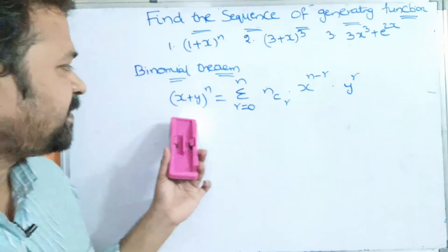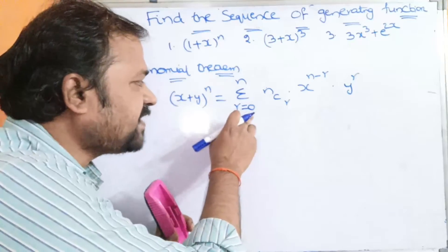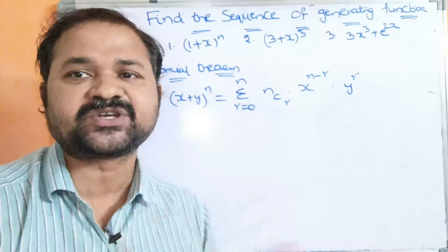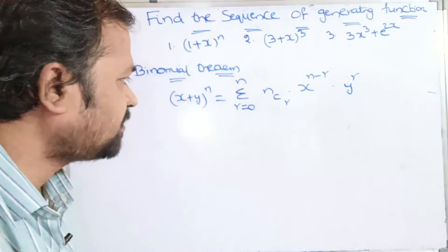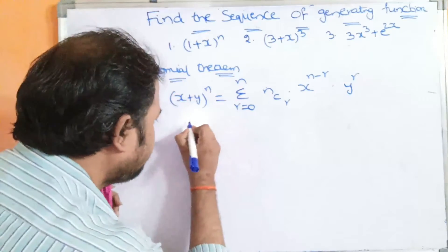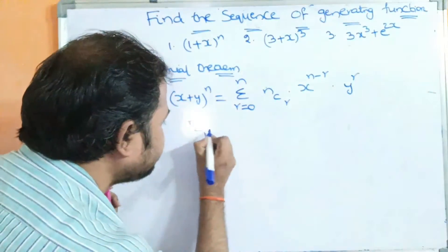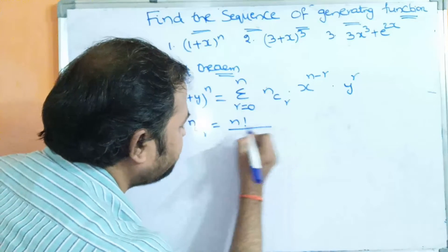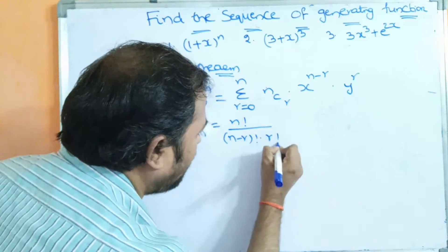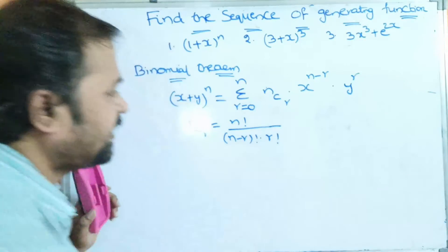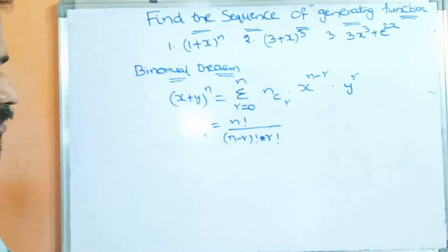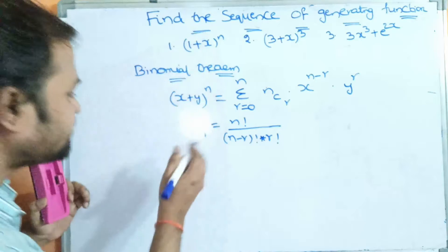Expanding (x+y)^n, we start with r=0, then r=1, then r=2, and so on, giving us the terms nCr · x^(n−r) · y^r. We also know the formula for nCr, which is n! divided by (n−r)! × r!.